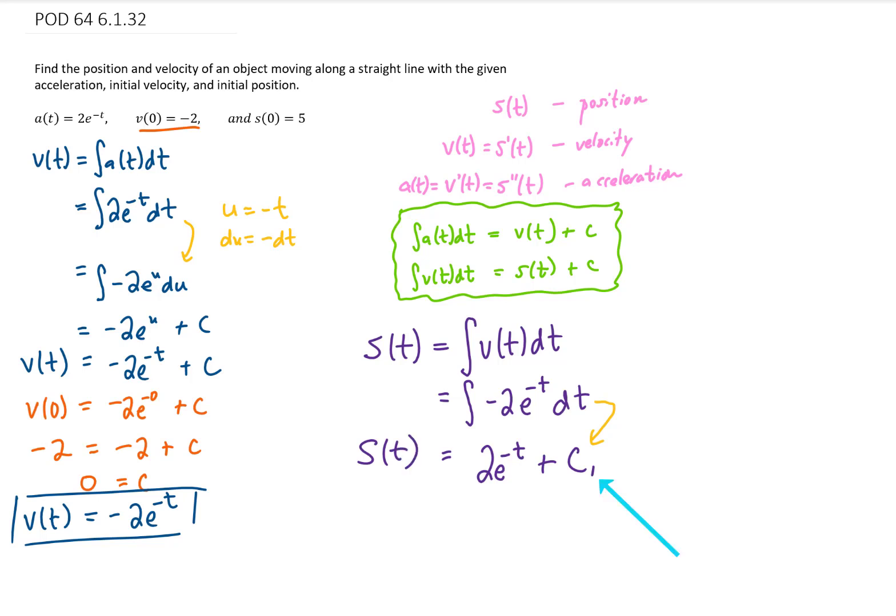Of course, we would like to know the value of this c1. To find that, we're going to use our initial condition. s(0) can be found by plugging t equals 0 into this function. Now we are given that s(0) equals 5, so I'm going to put that there.